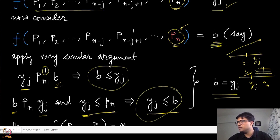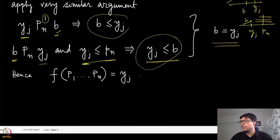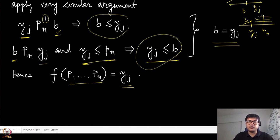At the end, after replacing all preferences, we have shown that the outcome is exactly y_j, which is the median of all the peaks — both phantom peaks and agent peaks. That proves the first part for the case where the median is a phantom peak. We will next see the case where the median is an agent peak.